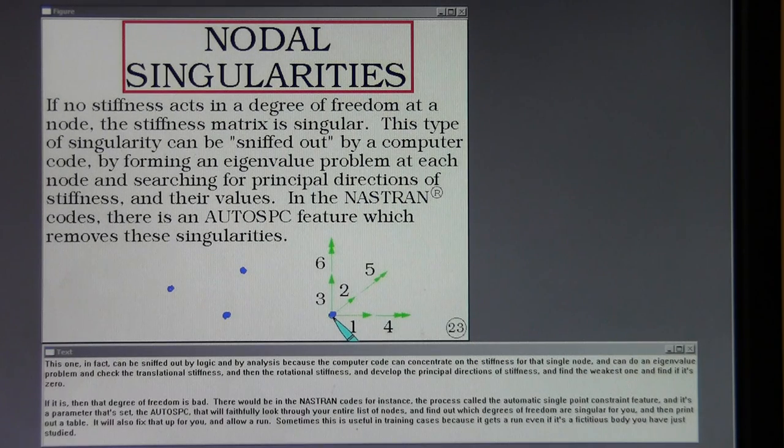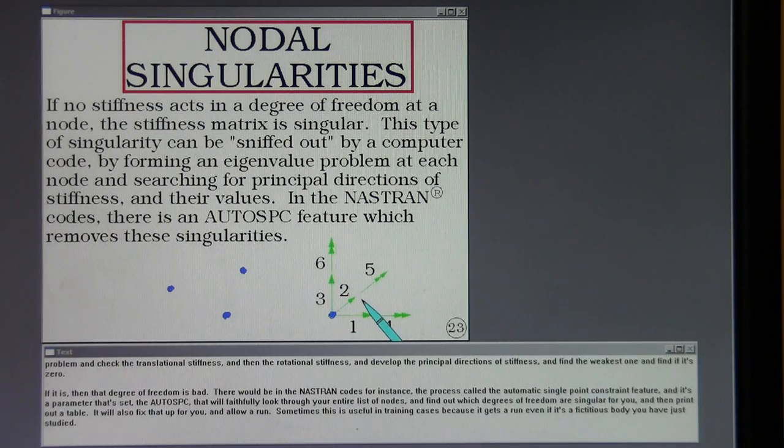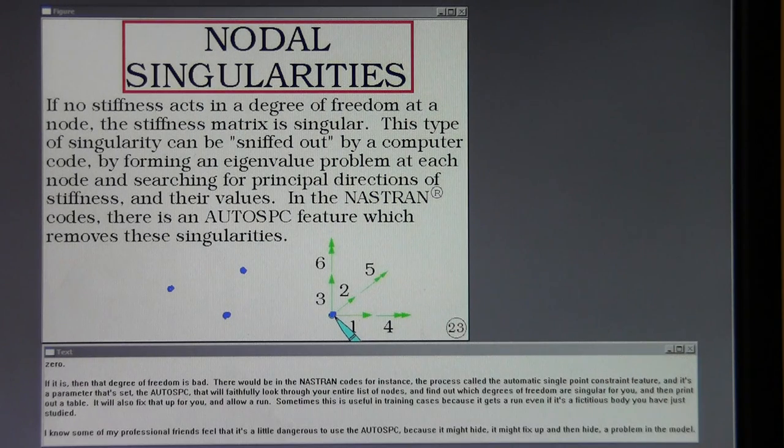There would be in the Nastran codes, for instance, the process called the automatic single point constraint feature. And it's a parameter that set, the auto SPC, that will faithfully look through your entire list of nodes and find out which degrees of freedom are singular for you and then print out a table. It will also fix that up for you and allow a run.